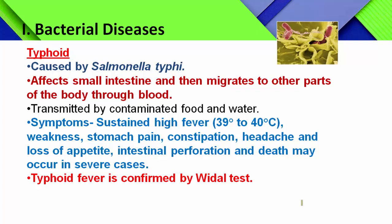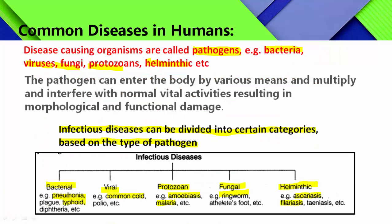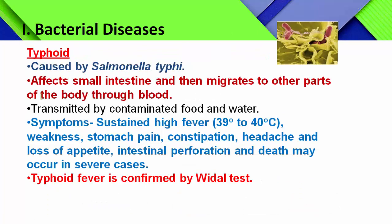The two bacterial diseases mentioned in the syllabus are pneumonia and typhoid. For each disease, you need to remember the causal organism, which organ of the body is affected, the mode of transmission, what the symptoms are, and any related diagnostic test.